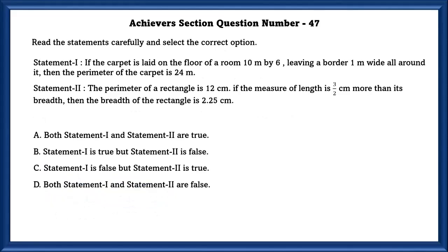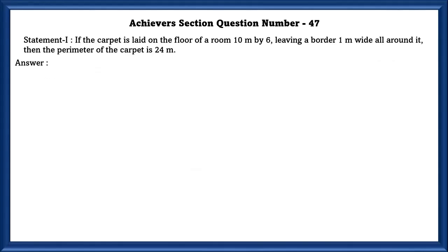Achievers section question number 47. Read the statements carefully and select the correct option. Statement 1: If the carpet is laid on the floor of a room 10 meter by 6, leaving a border 1 meter wide all around it, then the perimeter of the carpet is 24 meters.